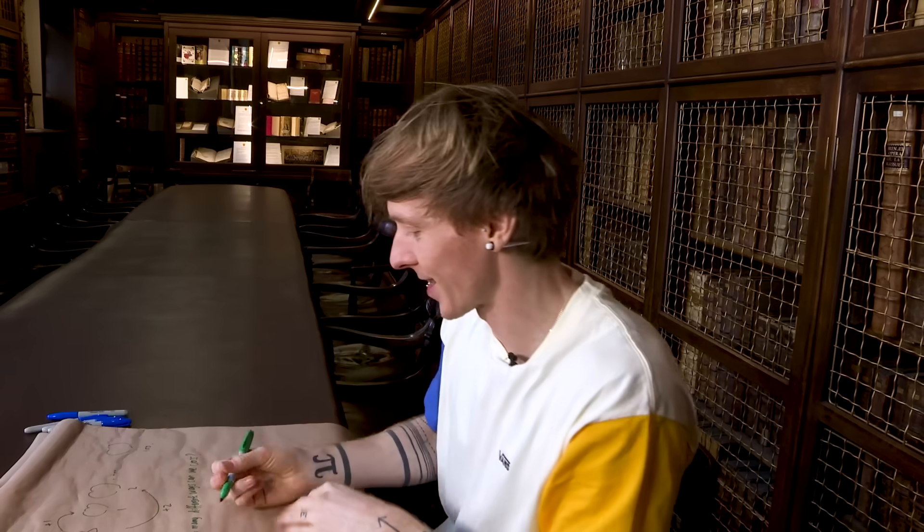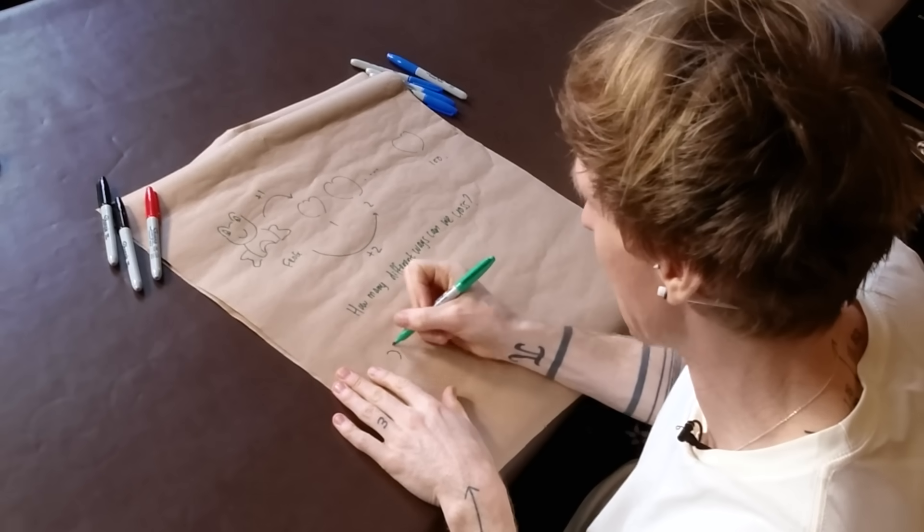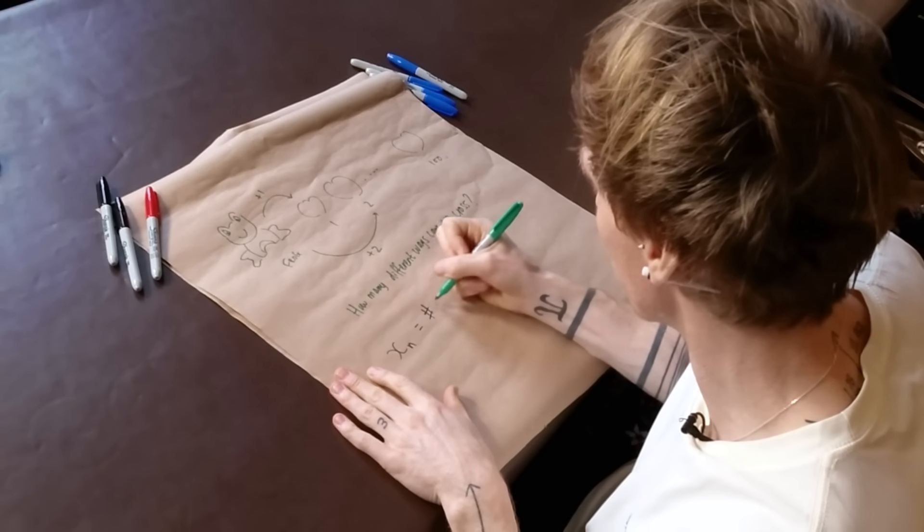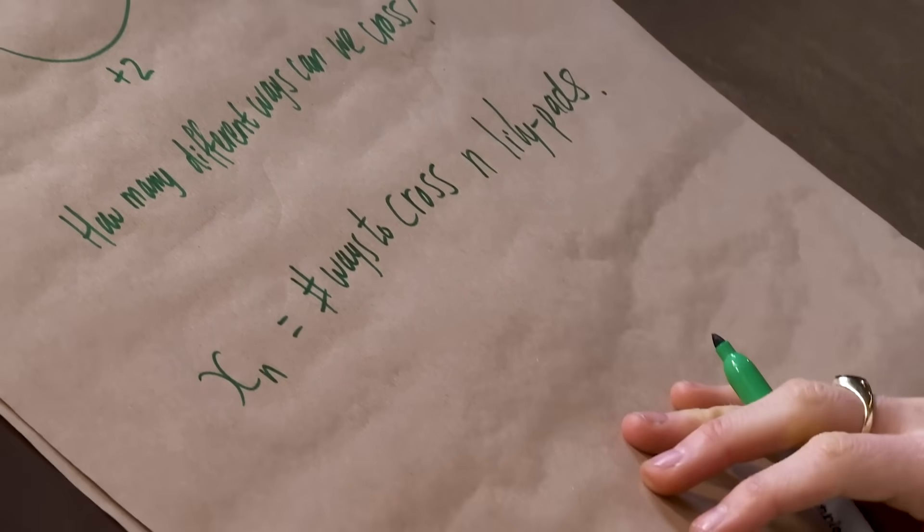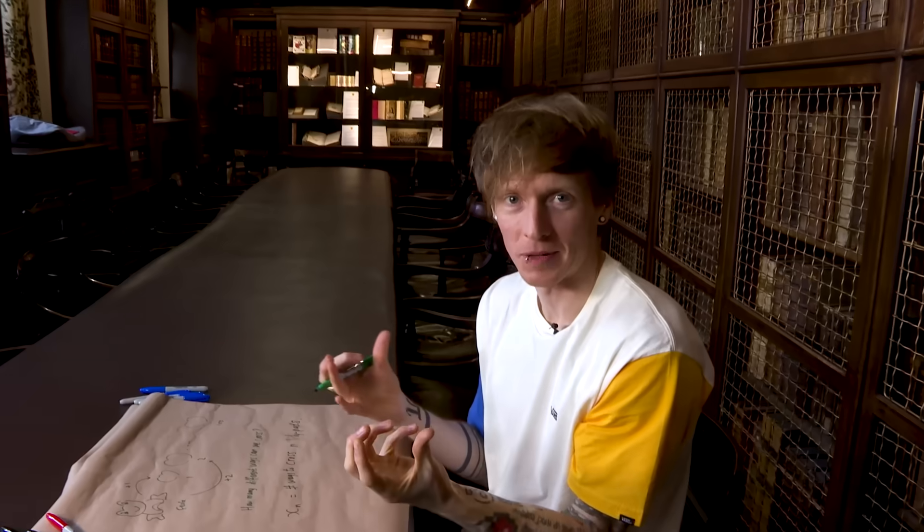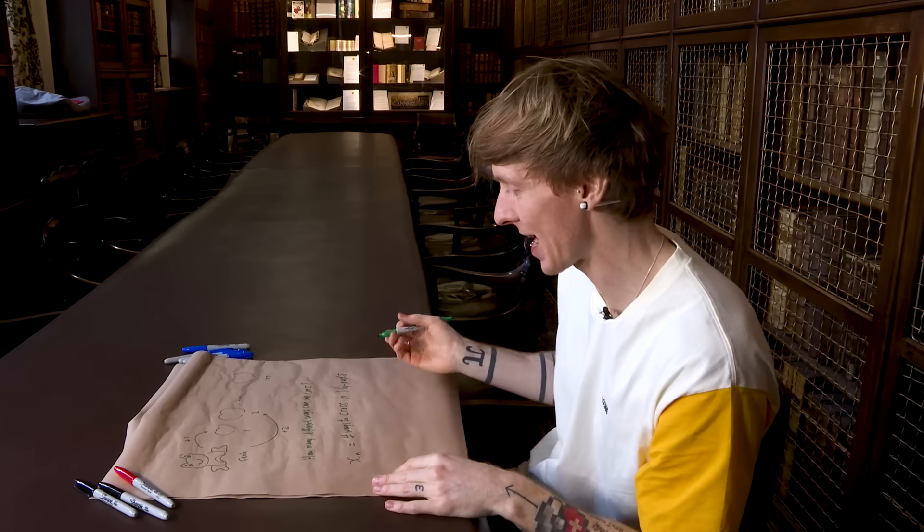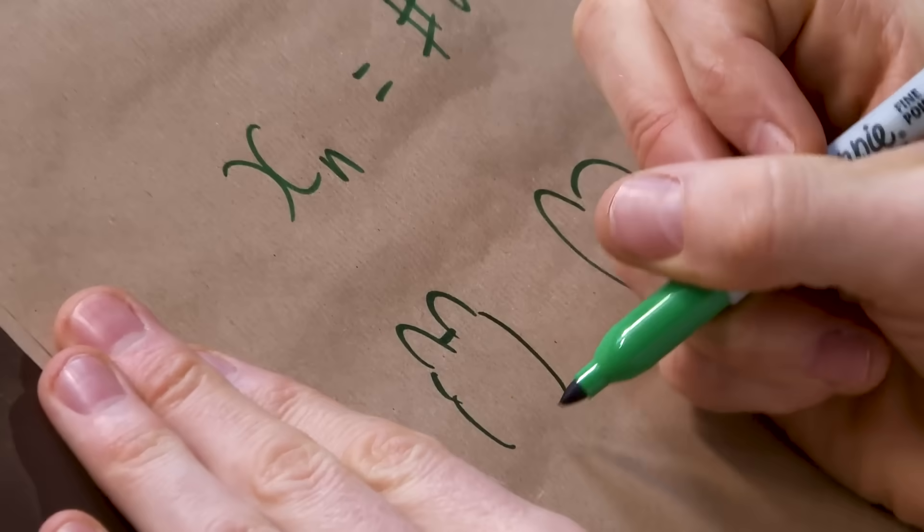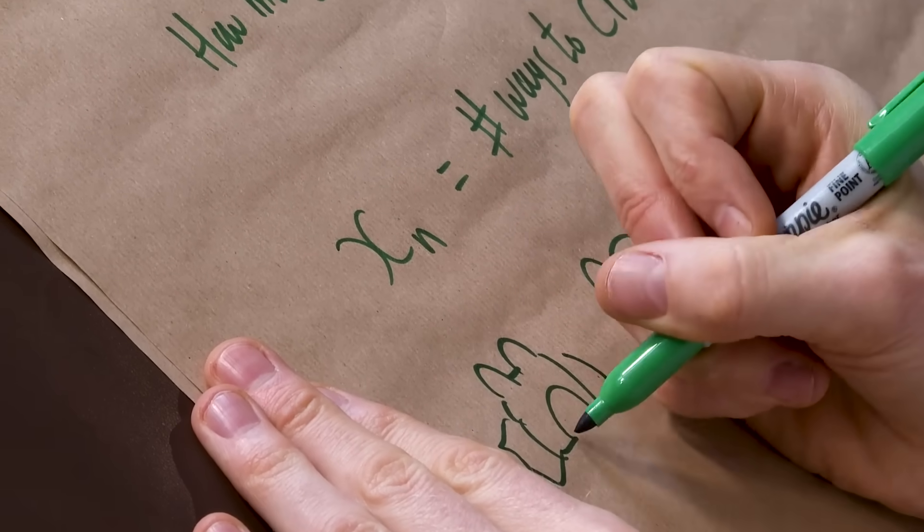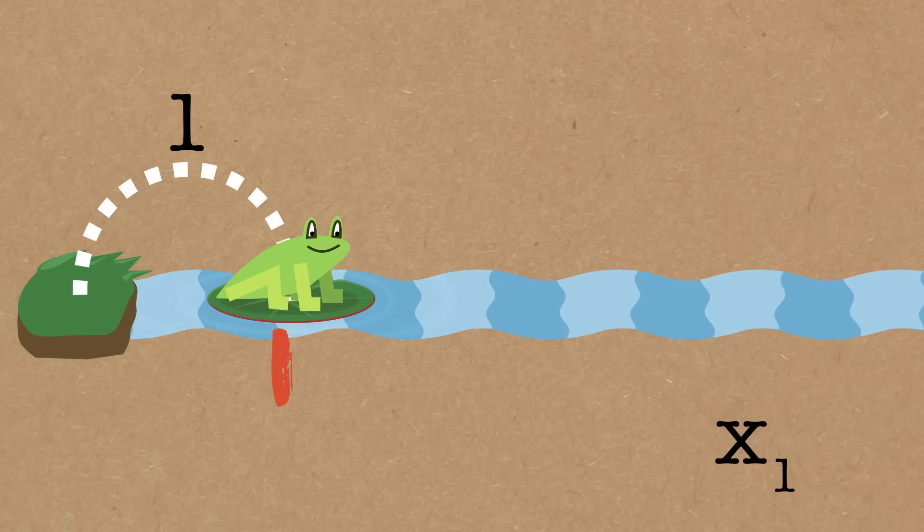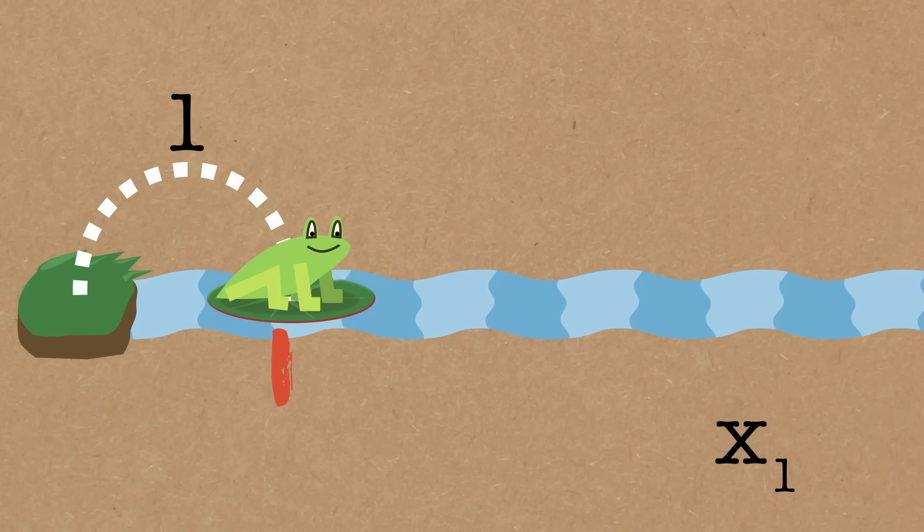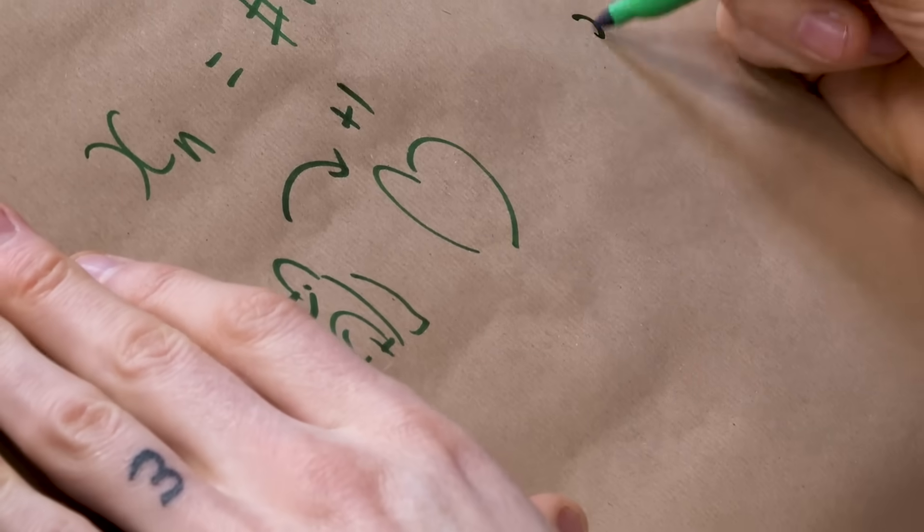We're going to start by defining a variable. We're going to let xn equal the number of ways to cross n lily pads. So we are interested in x100. But we're going to start by thinking about smaller values, try to get a grip on the problem. This is how you do any research level maths problem: you start simple, figure out what's happening, and then try and generalize. If we have a single lily pad, there's only one way to do that. We just go plus one. We can't do two because we'd overshoot. So x1 is definitely one.